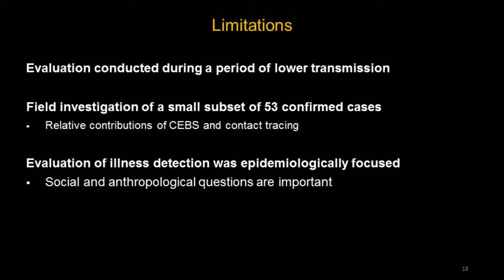As with any study, we have limitations. First, since transmission had declined substantially at the time of evaluation, it was not possible to determine how community event-based surveillance performed during high transmission periods. Second, field investigations were carried out on a small subset of the total 53 confirmed cases, making it difficult to assess the relative contributions of community surveillance and contact tracing. Third, as evidenced by the low use of illness triggers, social and anthropological questions around illness detection are very important, and we focused primarily on the epidemiological questions.